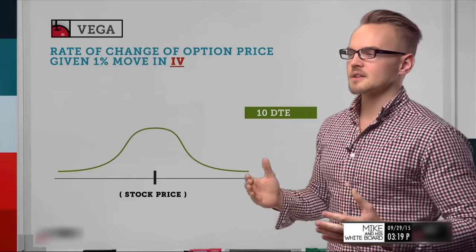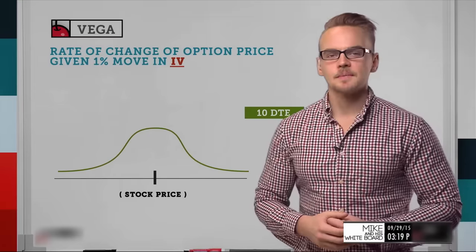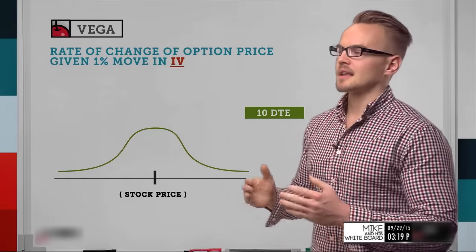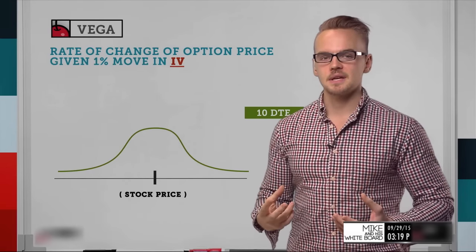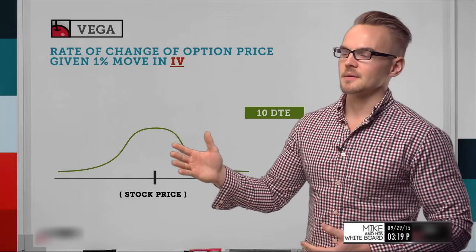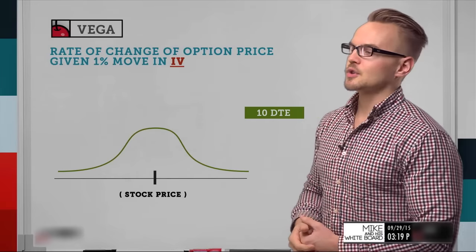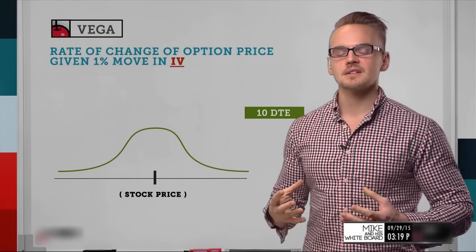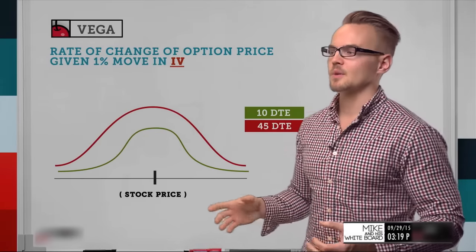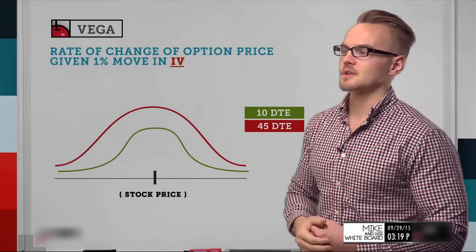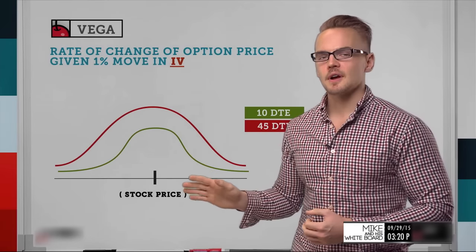When we look at a bell curve of Vega values, with a 10-day-till-expiration option, the Vega values are highest closer to the stock price and trail off as you go further out-of-the-money or in-the-money. That's because Vega is highest where extrinsic value is highest — at-the-money. When we add a further expiration, say 45 days, the Vega curve sits higher and wider than the 10-day curve.